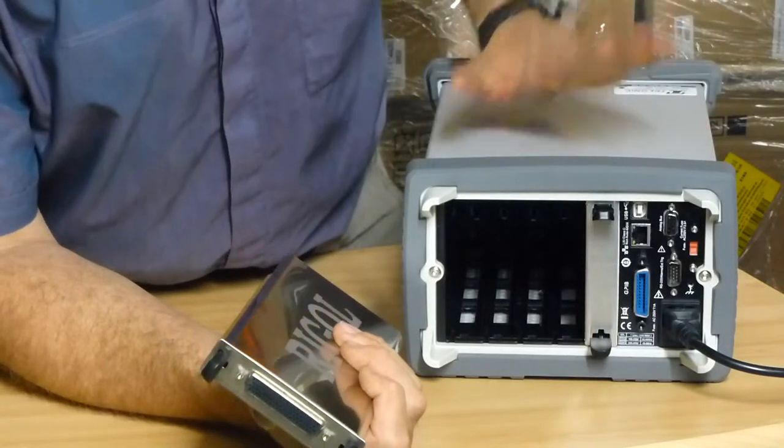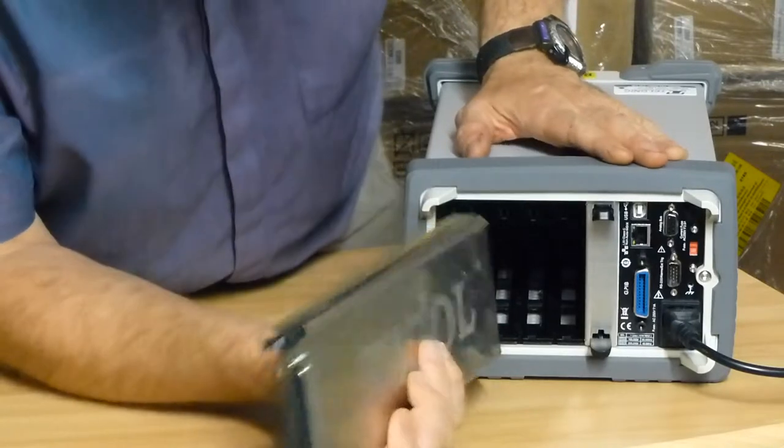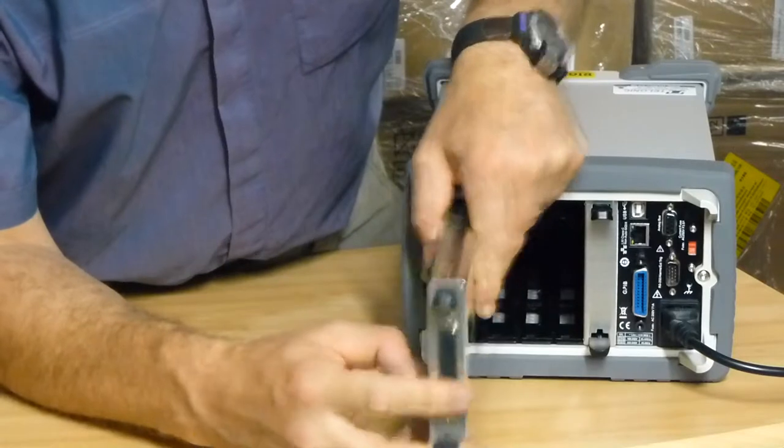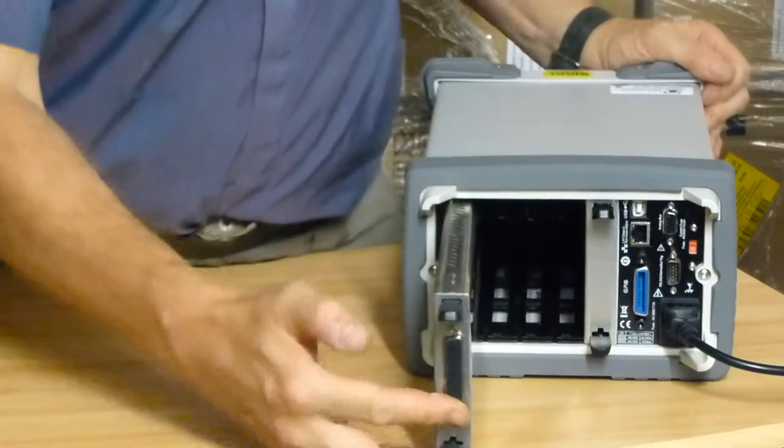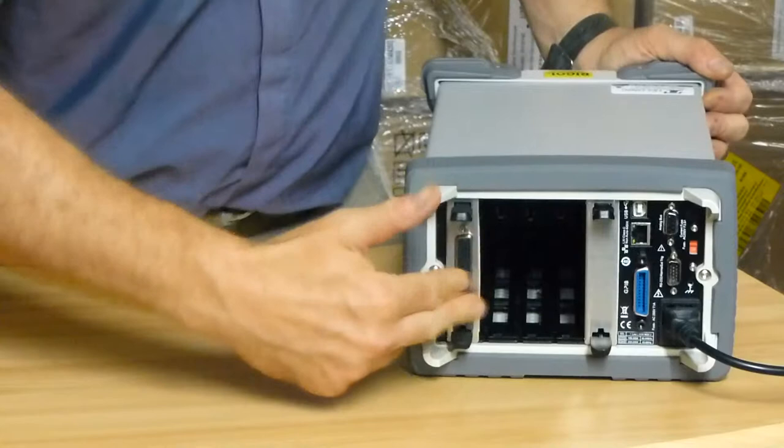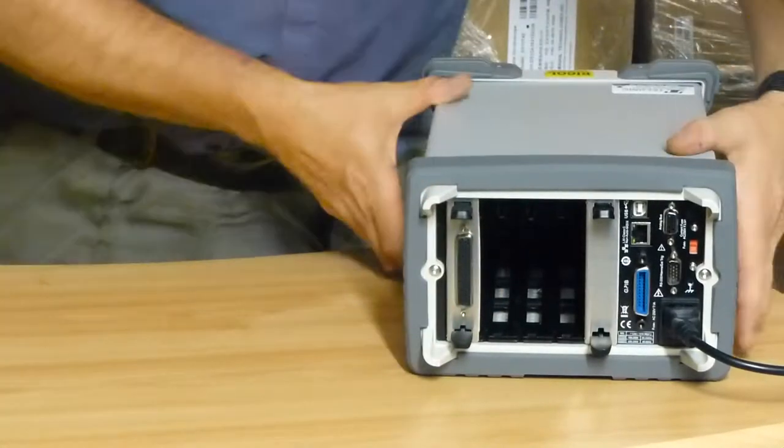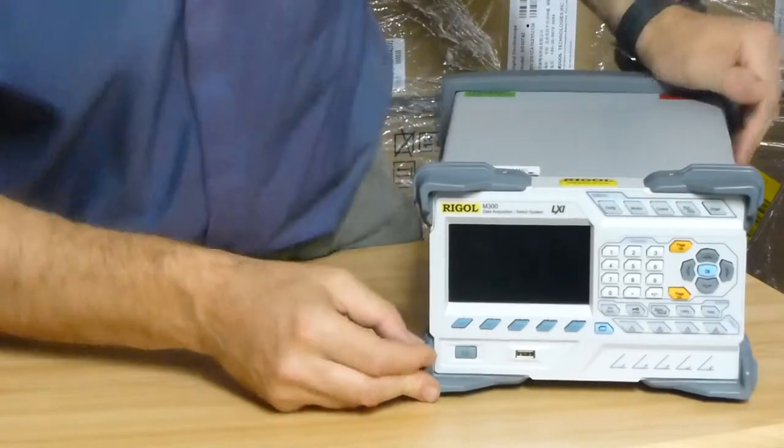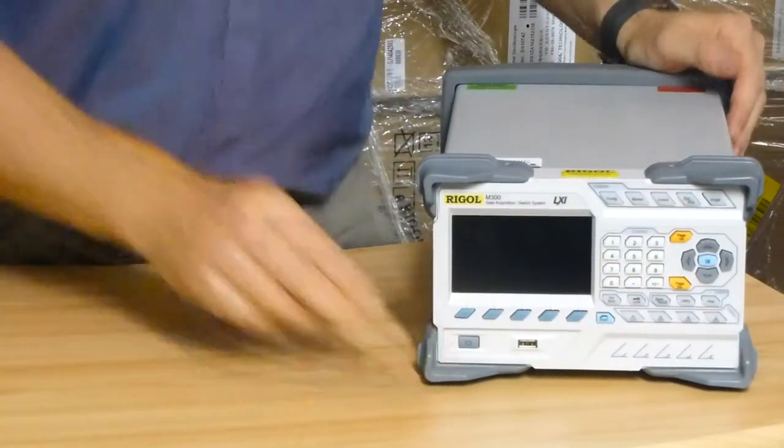The M301 comes complete with that multimeter unit fitted, and that is the most cost-effective way of purchasing that multimeter unit. What I'm doing now is I'm sliding the MC3132 card into the back of the system. So that's all you have to do to physically set up the system.